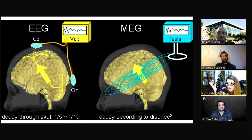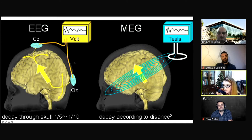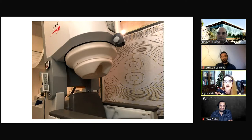I also worked on MEG — magnetoencephalography. There are very few MEG scanners in the world; the UK has 10. These are very expensive machines that work similarly to EEG but instead of measuring voltage they measure the magnetic field generated by brain signals. One advantage is that they are not affected by the thickness of the skull as EEG is. I worked on better ways to carry out data analysis on MEG data.